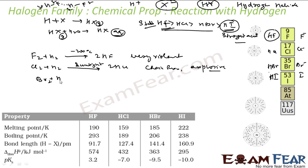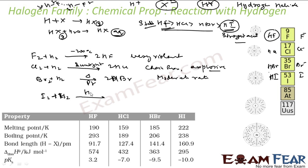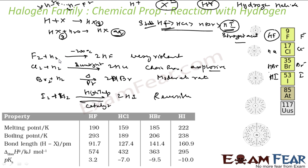Bromine reacts with hydrogen to give 2HBr, but you need some heat and a catalyst; it is a moderate-rate reaction. Iodine reacts with hydrogen at very high temperature with a catalyst, and this reaction is reversible. So: fluorine — violent even at −200°C; chlorine — sunlight needed, explosive chain reaction; bromine — heat and catalyst, moderate rate; iodine — high temperature, catalyst, reversible.